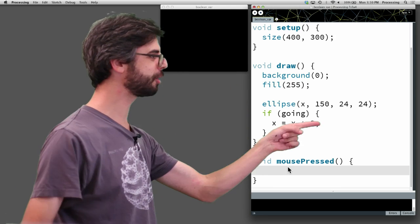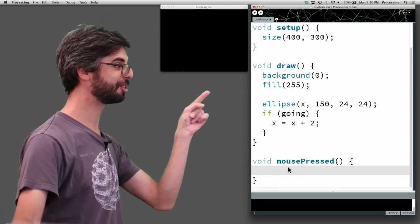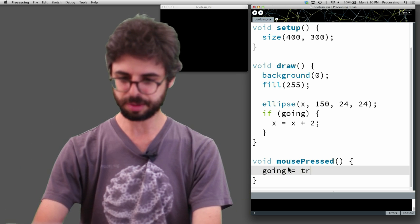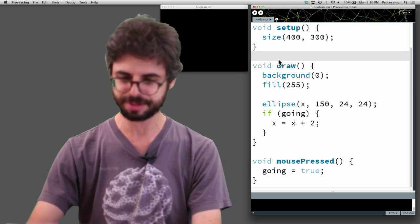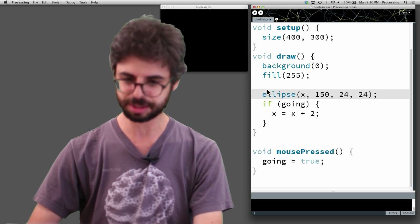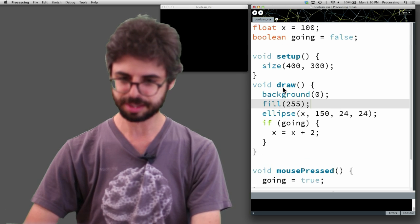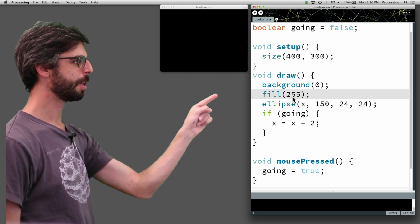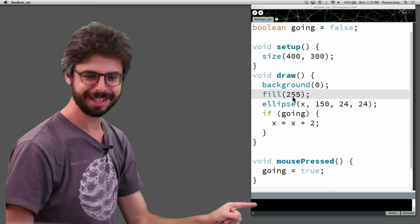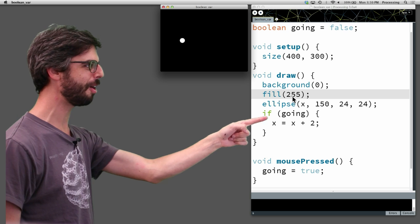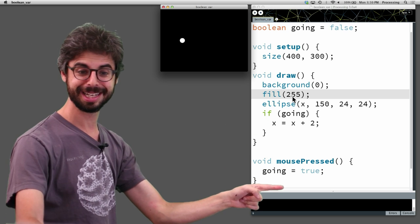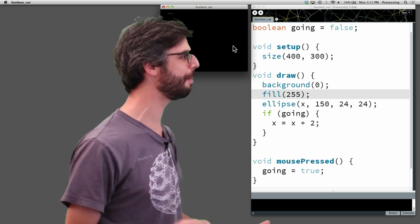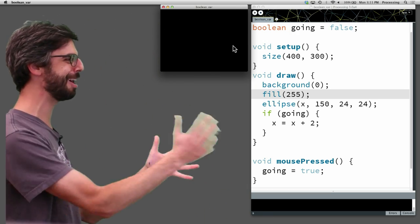And then when in mousePressed, this is an event that's triggered as soon as the user clicks the mouse. Let's set going equal to true. So when we run it, it's not moving. It's not moving because going is false. But now when I click the mouse, going becomes true and it moves. Oh, stop it. Click the mouse. Oh, no matter what, whenever I click the mouse now, going is true. What if I want going to become false?